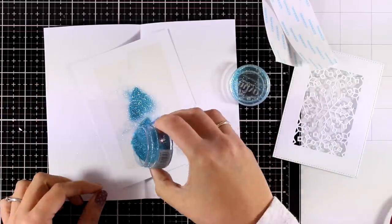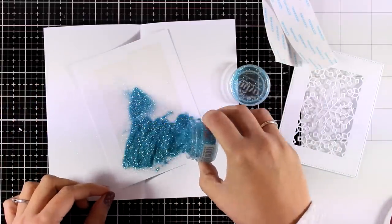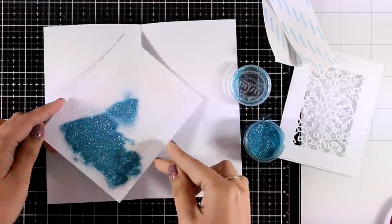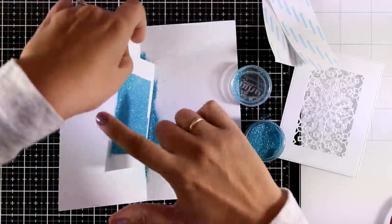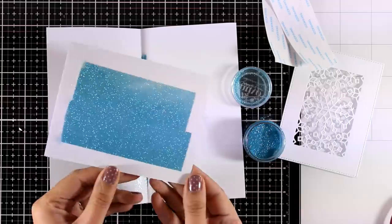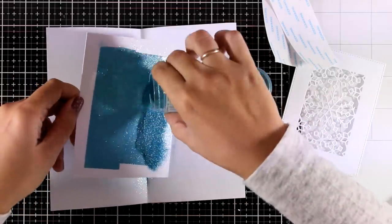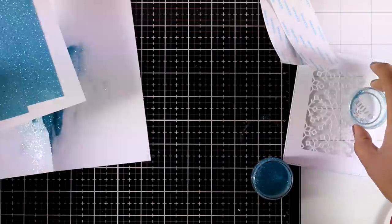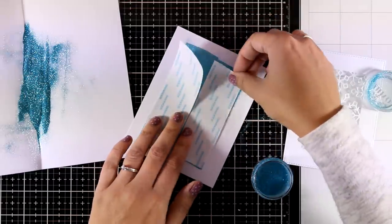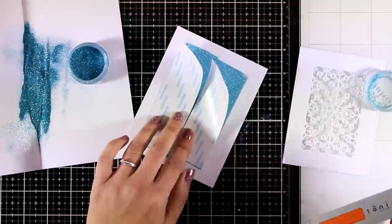Now the good thing about using very fine glitter is that it sticks nicely on top of that tape and it is not going to move on you. On top of that this is going to be a background behind that window so no matter what you do it is not going to stick on your fingers or the fingers of the recipient.